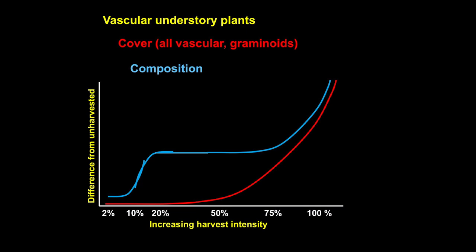Getting back to the original diagram and what we hoped to achieve: in terms of vascular plant cover, we got a response where cover increased across all vascular plants and particularly for graminoids. In terms of composition, we got a difference between the 100% and the 75% retention, but often the 75%, 50%, and 20% weren't that different from one another, while the 2% and 10% were different.